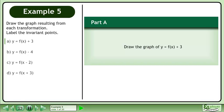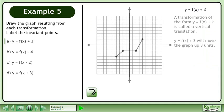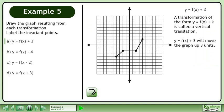In Part A, we'll draw the graph of y equals f(x) plus 3. A transformation of the form y equals f(x) plus k is called a vertical translation. y equals f(x) plus 3 will move the graph up 3 units.